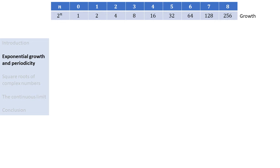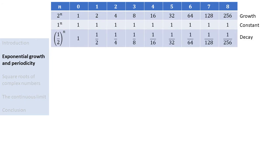Now let's see what happens when we change the number 2. For example, instead of 2, let's make it 1. Then for n is 0, we get 1, for n is 1, we also get 1, and we will also get 1 for every other n. So we see that now the sequence remains constant. If we consider 1 half to the power n, we see that the sequence decays exponentially.